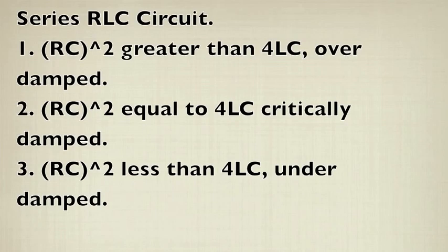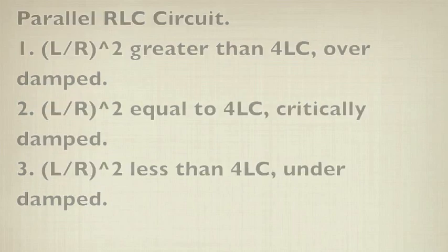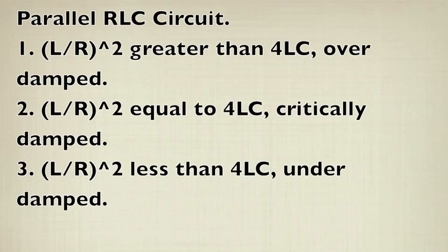In summary, for the series RLC circuit, if RC squared is greater than 4LC, it's overdamped. If RC squared equals 4LC, the circuit is critically damped. If RC squared is less than 4LC, we have an underdamped circuit. For the parallel RLC circuit, if L over R squared is greater than 4LC, it's overdamped. L over R squared equal to 4LC, that's critically damped. And if L over R squared is less than 4LC, we have an underdamped response.